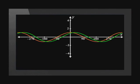Let's draw the graph y equals cos(x minus 30 degrees) on the same set of axes as the standard graph. We can see that y equals cos(x minus 30 degrees) is 30 degrees to the right. Because we are horizontally shifting, only the x values will shift — the y coordinates remain the same.